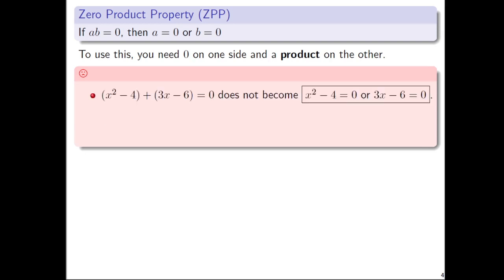So here are some things that don't work. If you had x² - 4 + (3x - 6) = 0, that doesn't become x² - 4 = 0 or 3x - 6 = 0. The issue is that the left side isn't a product. You have a sum, right, with that plus sign.